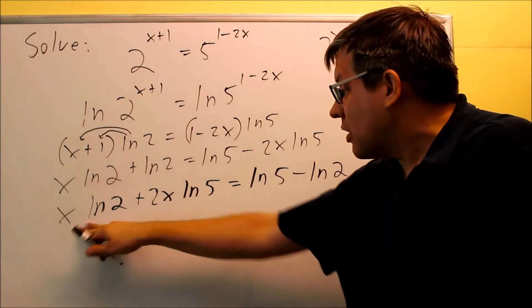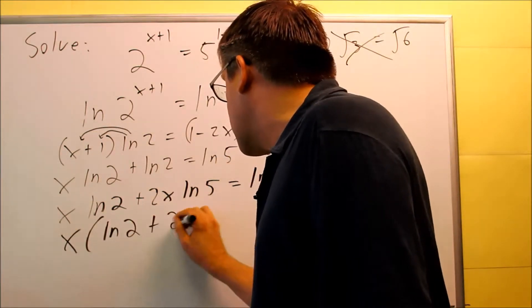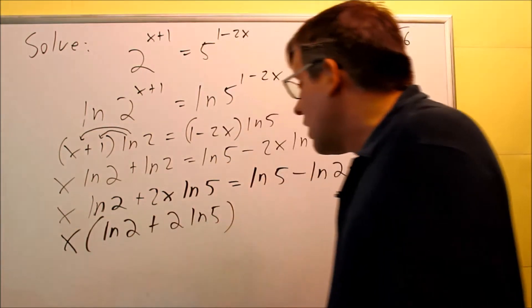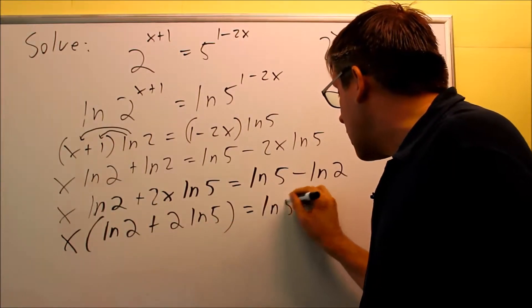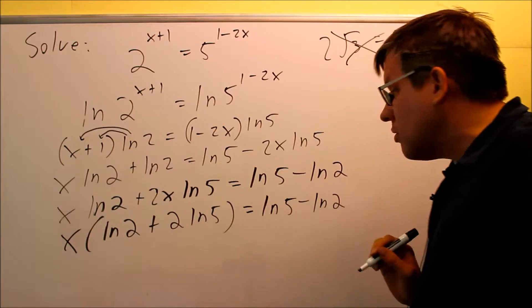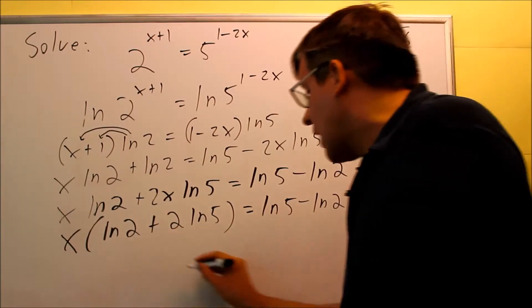What I need to do now is factor out an x because it's a common factor. And if I do that, I get x times (ln 2 + 2 ln 5) equals ln 5 minus ln 2. Because I factor that out, now I can divide both sides by what's after the x.